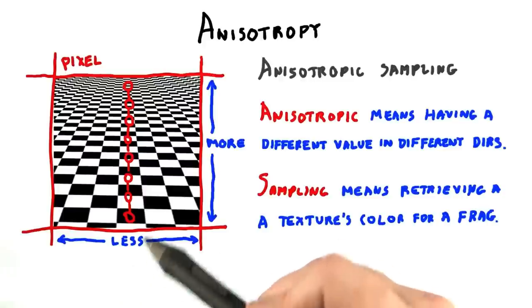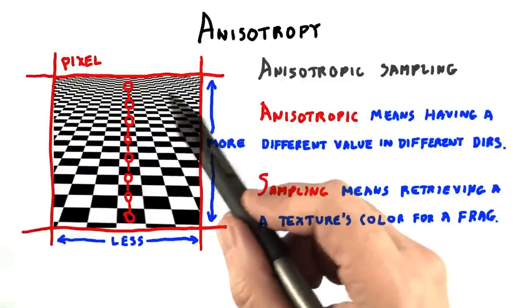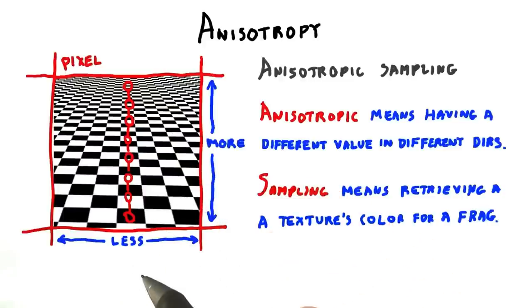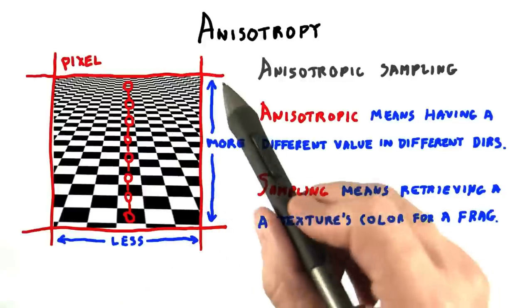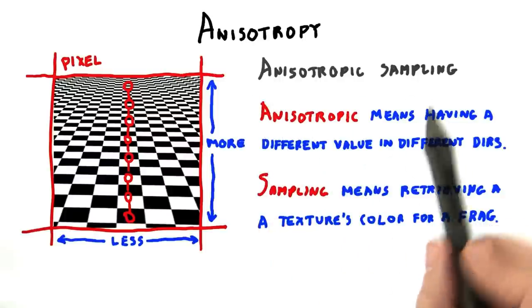Mipmapping looks much better, but goes to gray at the horizon. Modern GPUs can do even better than this by using anisotropic sampling.